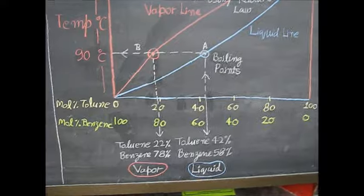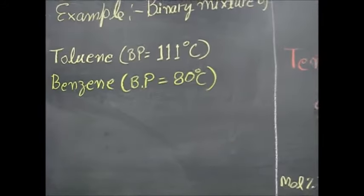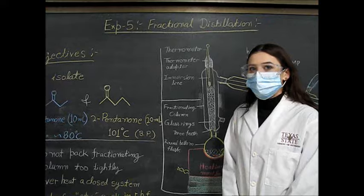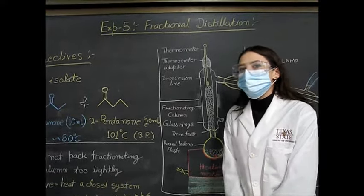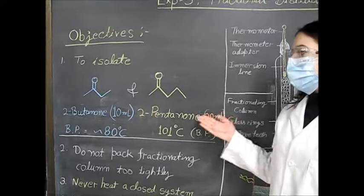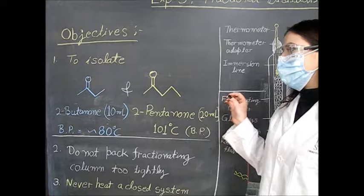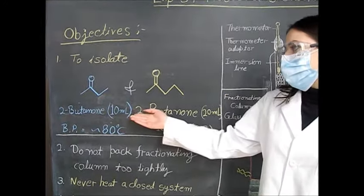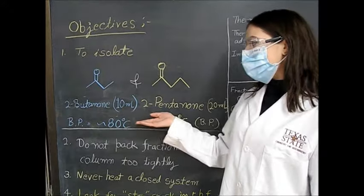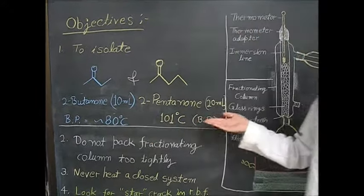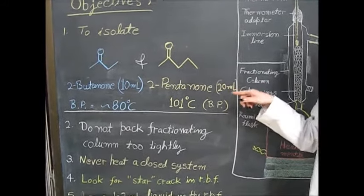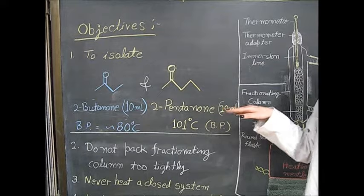Benzene has a lower boiling point of 80 degrees Celsius. In this specific experiment, we're going to use fractional distillation to isolate 2-butanone and 2-pentanone from a mixture containing 10 milliliters of 2-butanone and 20 milliliters of 2-pentanone. The boiling point of 2-butanone is about 80 degrees Celsius and 2-pentanone is about 101 degrees Celsius.